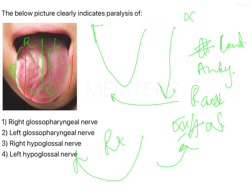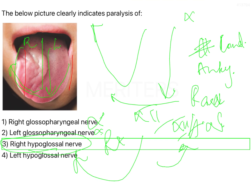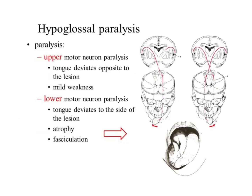Now, the answer over here is: since the motor supply is the hypoglossal nerve, you can eliminate both option 1 and 2. Like I told you, it shifts to the same side. So, the answer is right hypoglossal nerve. However, one important thing that you need to remember is, when you have paralysis of the hypoglossal nerve, there are two types of paralysis.